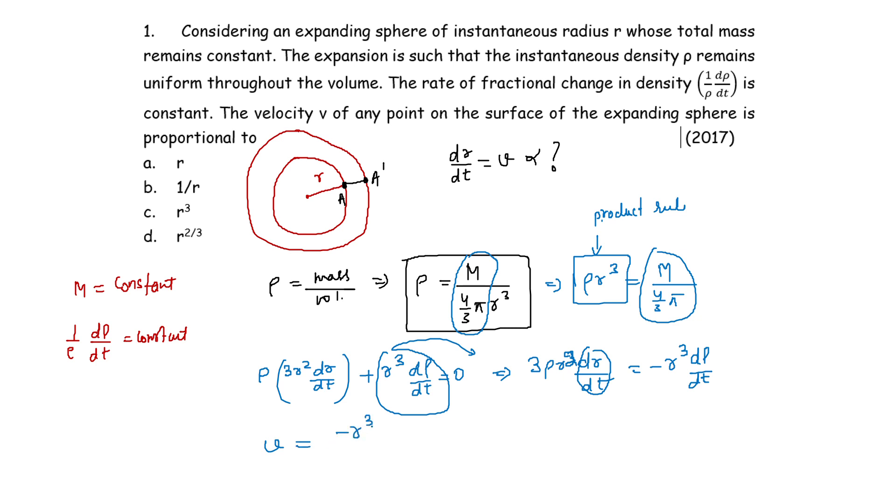and this will be r³ dρ by dt divided by 3ρ r². r² can cancel the power, and then we will be remaining with minus r over 3, and 1 by ρ dρ by dt. And by this time you already know what we are going to do. So this quantity is again constant, 3 is constant, negative sign is constant, which means the velocity is proportional to r raised to the power 1,